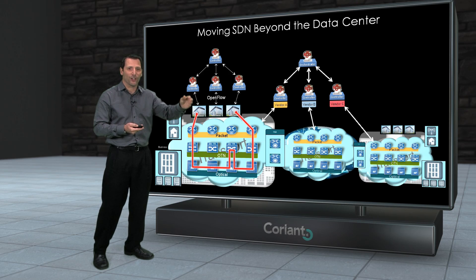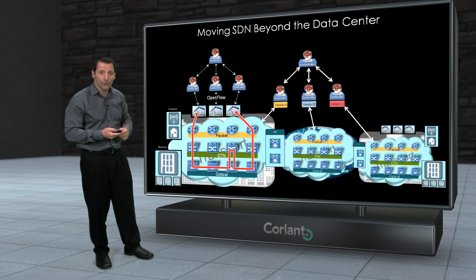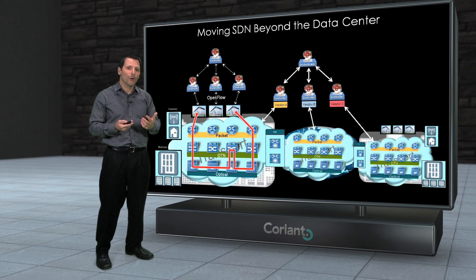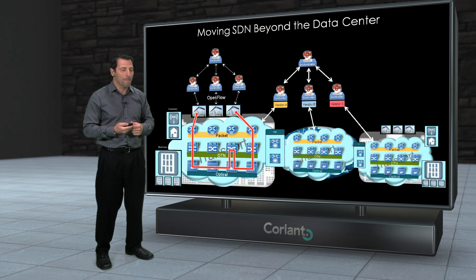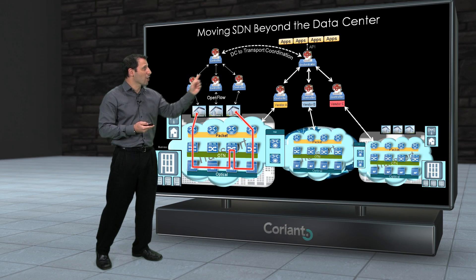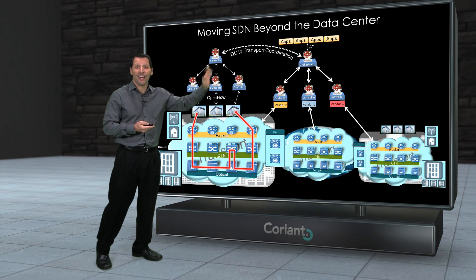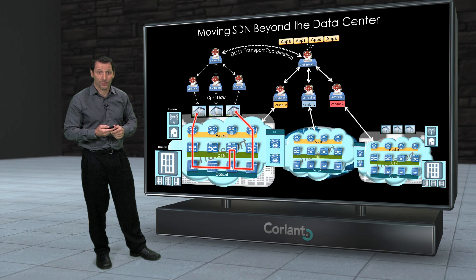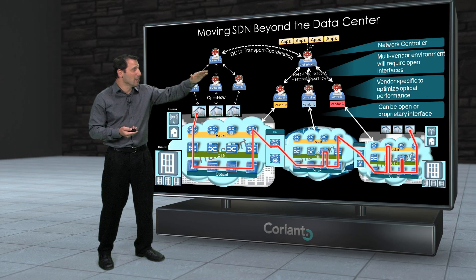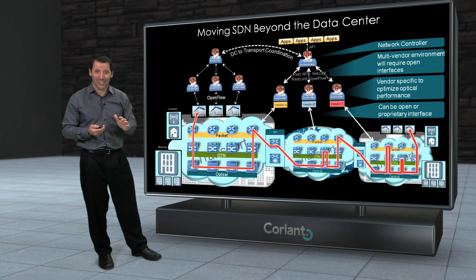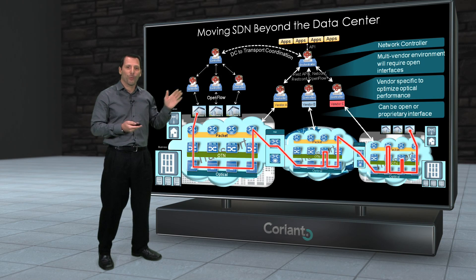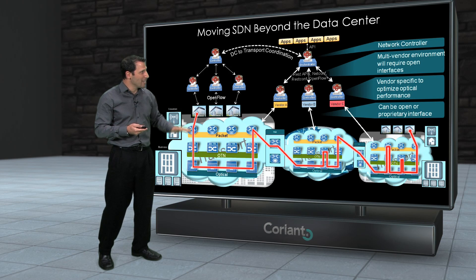The key idea is you want to tie all of those together so that you can really create these end-to-end solutions. We can leverage experience from these data center-based controllers that already have to operate in multi-vendor environments. So we'll have this controller architecture, with the ability to layer applications on top of that, and coordination between data center controllers and network controllers or network orchestrators. And of course there are all these protocols that you need to govern the communication between all these different layers — protocols designed to keep these interfaces open so that you can have as many different vendors across as many different layers as possible.